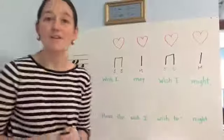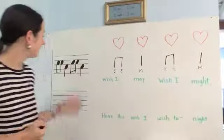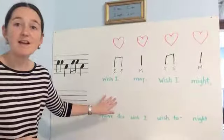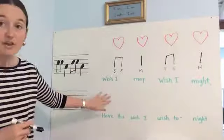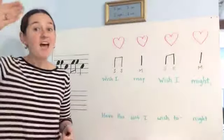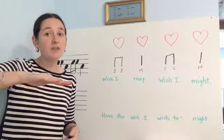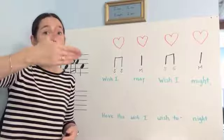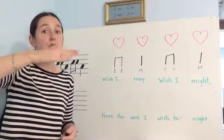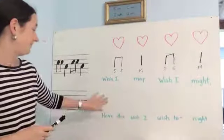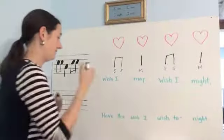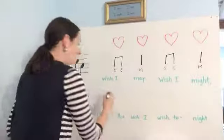So we have our third line of the song — we have that all done. Let's work on the last line. Here's how it goes: have this wish I wish tonight. That's tee-tee, tee-tee, tee-tee, tee-tee, tee-tee. Wow, Jack, that was quick.